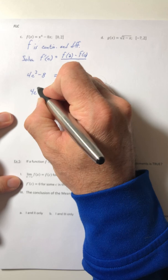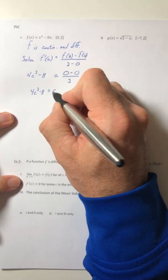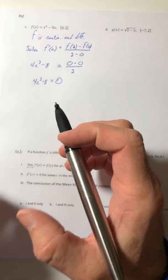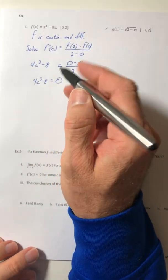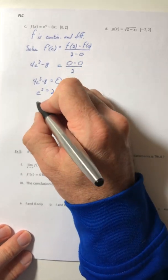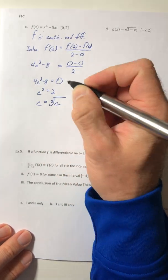And the denominator is 2. So your left side is just 4c to the third minus 8. The right side is just zero. Well, now you've got something where you can kind of grasp and get your hands on it and solve it.